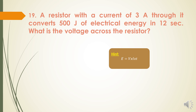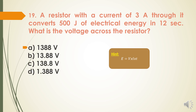Next question: A resistor with a current of 3 ampere through it converts 500 joules of electrical energy in 12 seconds. What is the voltage across the resistor? Using the energy equation E = V×I×T, substituting the given values and solving for V, the answer is option A — 13.88 volts.